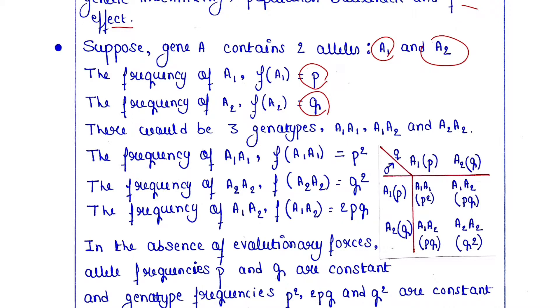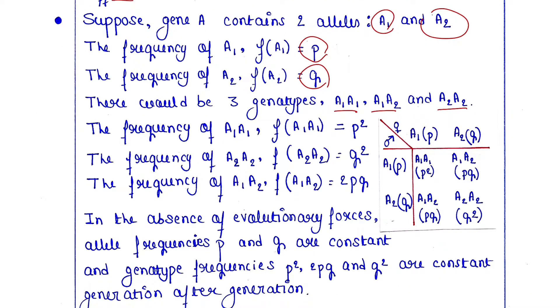There would be three genotypes: A₁A₁, A₁A₂, and A₂A₂, as two alleles are there. The frequency of A₁A₁ is P² because the frequency of A₁ is P, so P times P equals P².